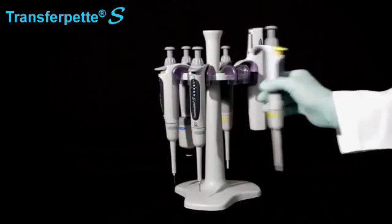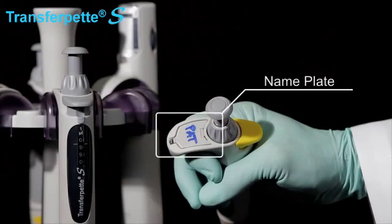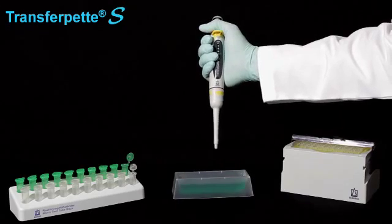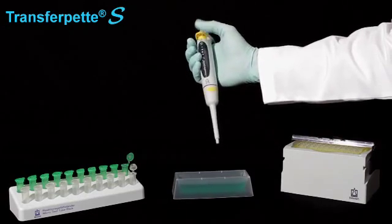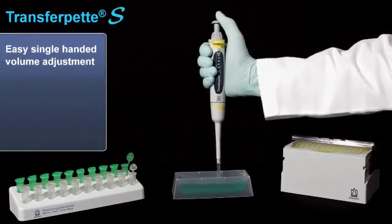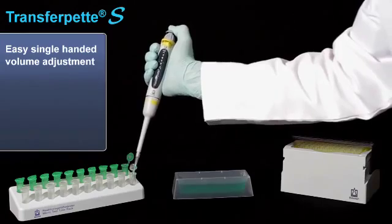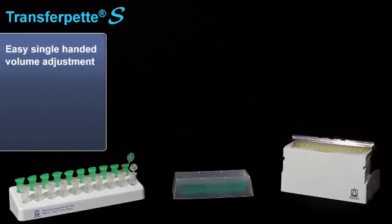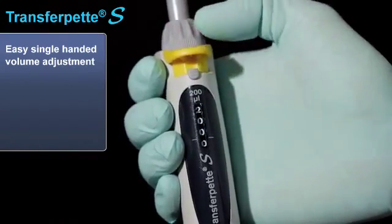The Transferpette S truly shines when in operation. Single-handed volume adjustments while wearing gloves makes all of your pipetting operations easier and faster. Simply raise the brake and adjust the display to your desired volume.